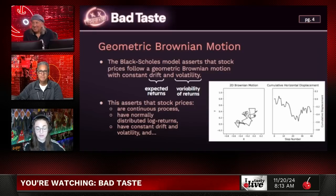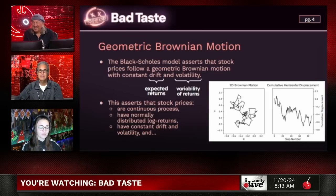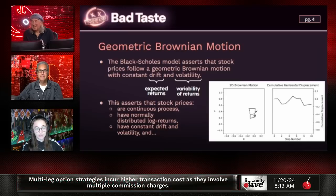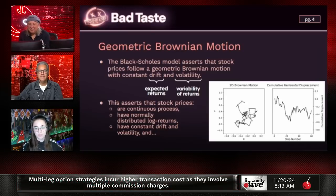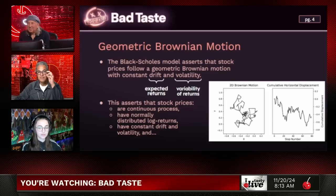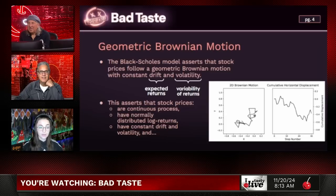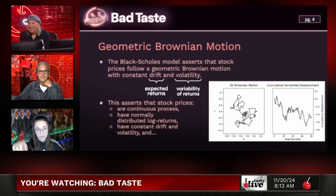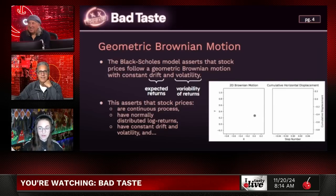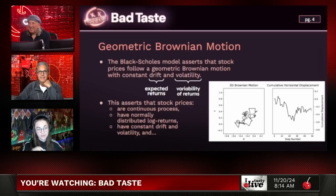Assuming a constant drift and volatility, there are some assumptions that come when we assert that this is what a stock price follows, such as that stock prices are a continuous process, they have normally distributed log returns, and they have constant drift and volatility. What we have here — that first little chart on the left — is a particle actually undergoing Brownian motion in a fluid. The horizontal displacement of that particle over time actually looks like a stock price. Isn't that cool?